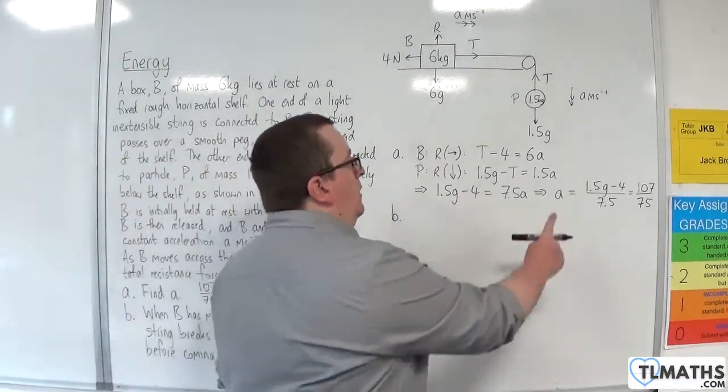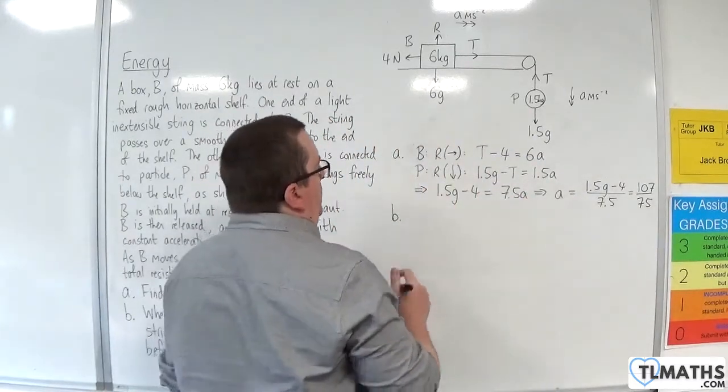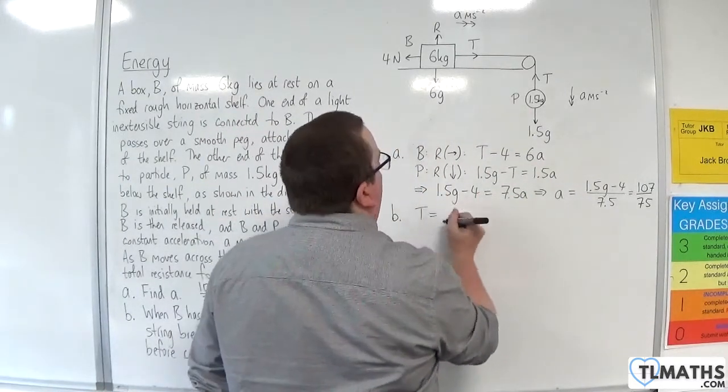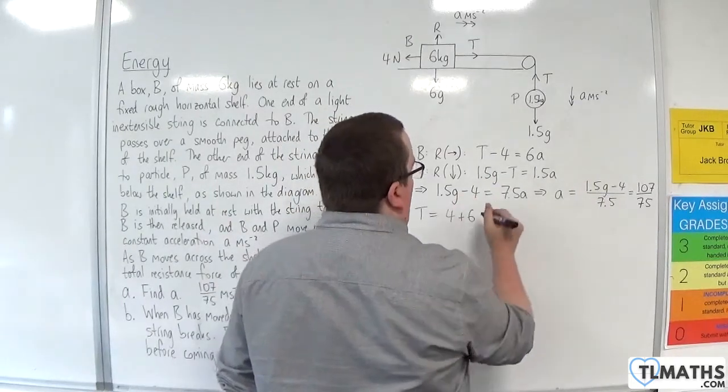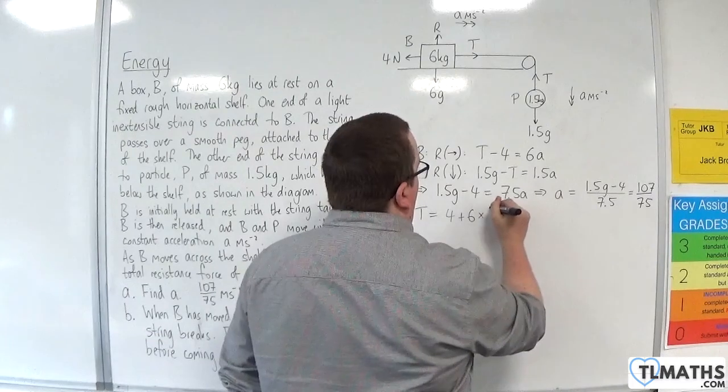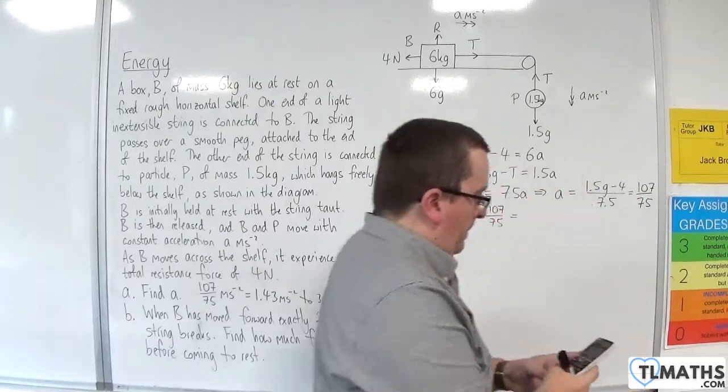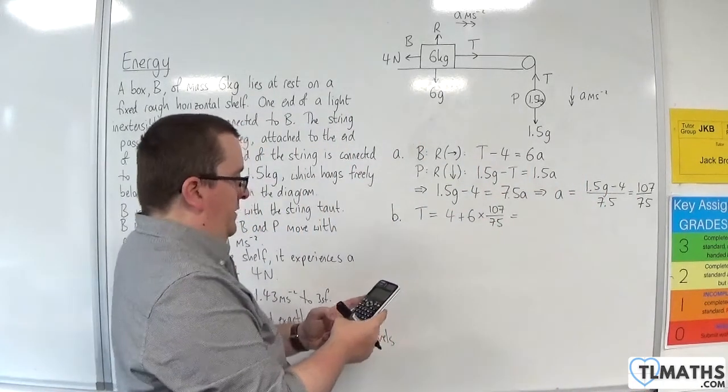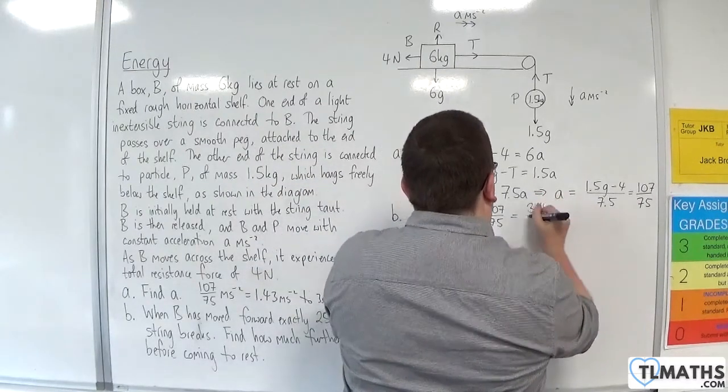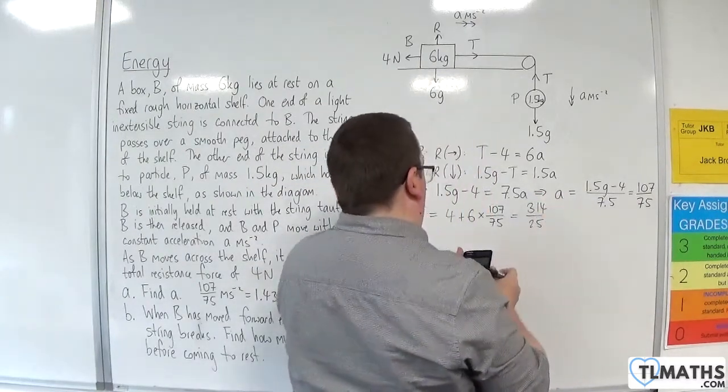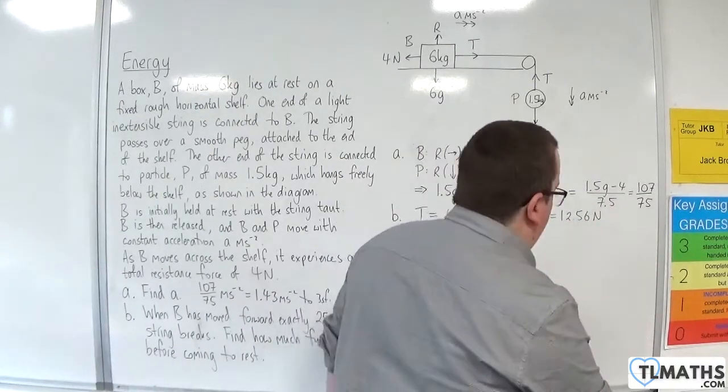Now, seeing as I've worked out what A is, I can plug that back in to work out what T is. So, T is equal to 4 plus 6 lots of A. So, 107 over 75. So, times by 6, add on 4, and we get 314 over 25. So, 12.56 newtons. OK, so that's my tension.